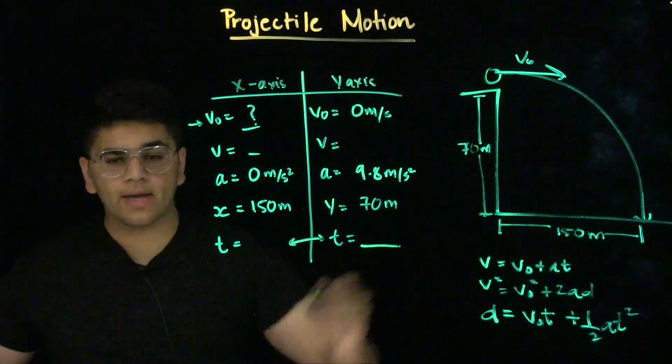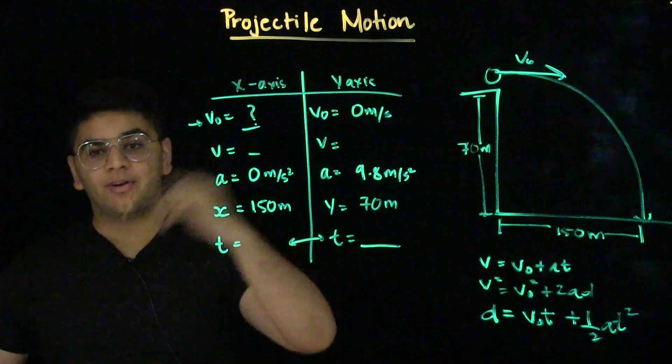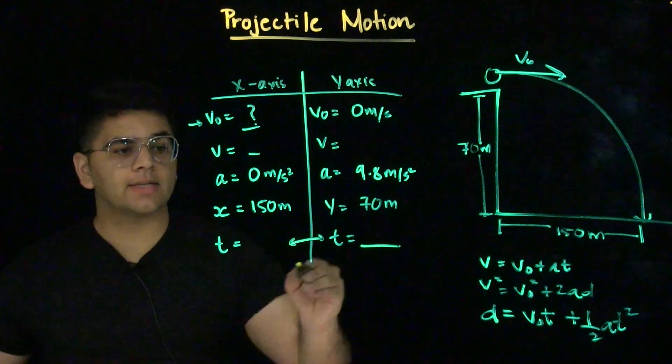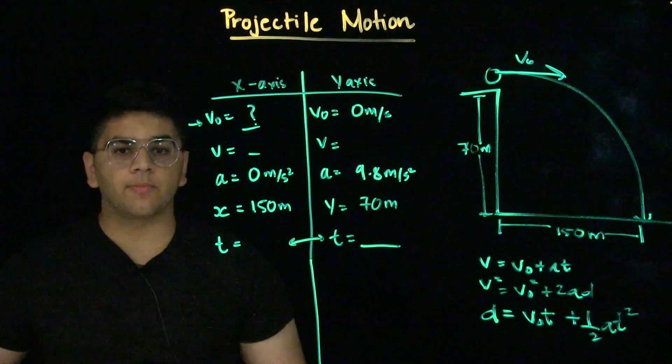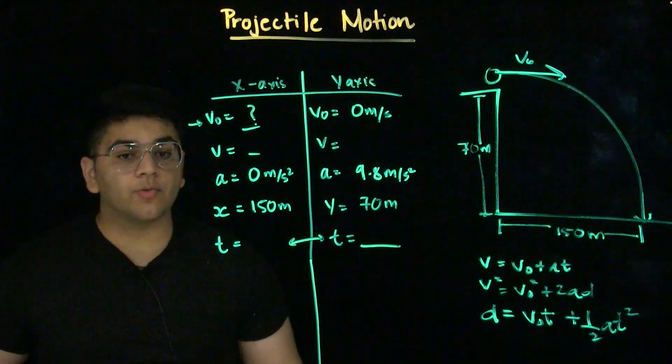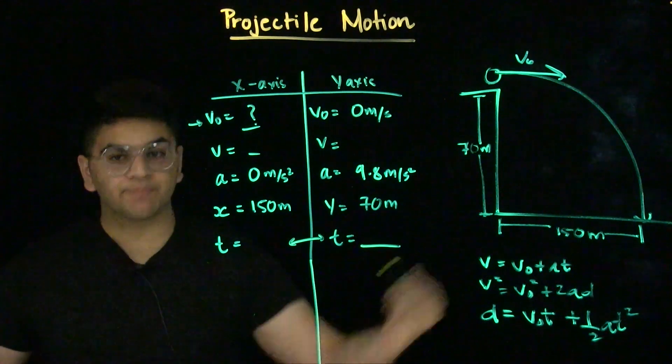If we solve for time in the y-axis, we can use that to solve for our initial velocity in the x-axis. So, which kinematic equation do you think would work best? It would be the third one.